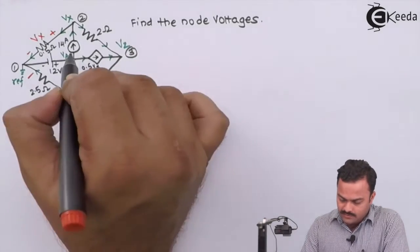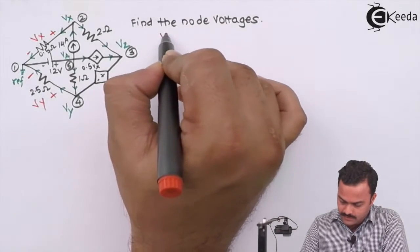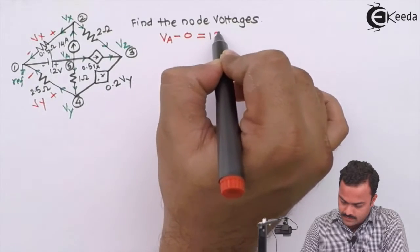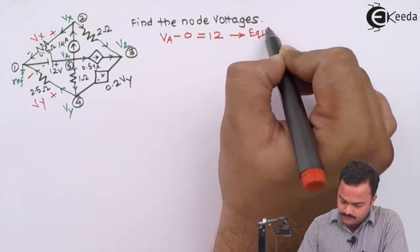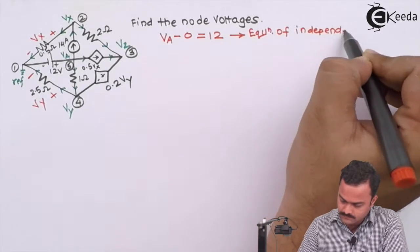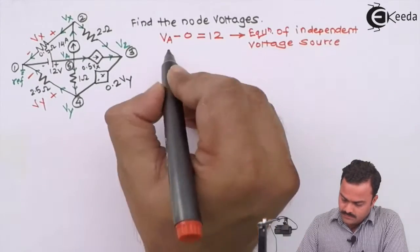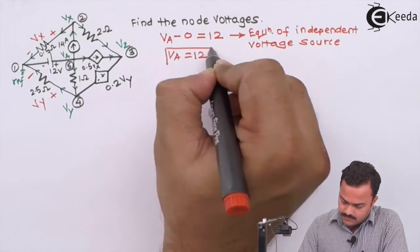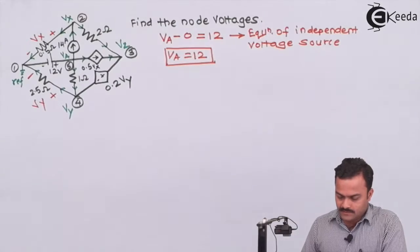The first and foremost important thing is to write the equation of the independent voltage source. We mark V8 minus 0 equals 12, which gives us V8 equals 12. This equation of the independent voltage source is required while solving the problem.